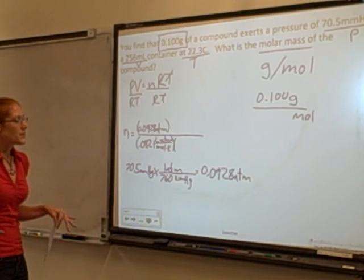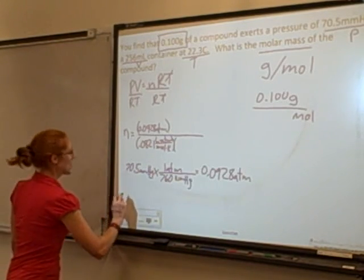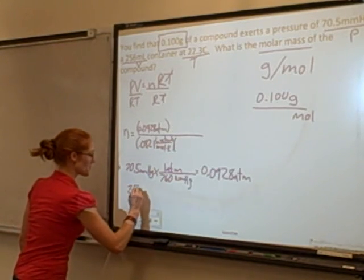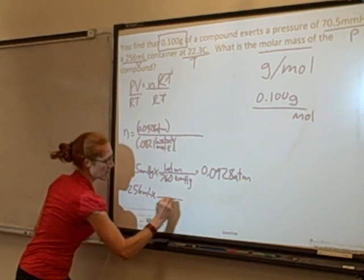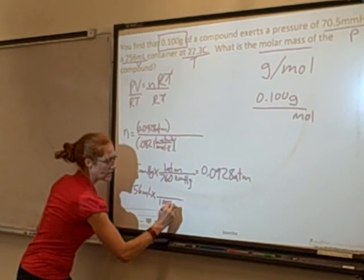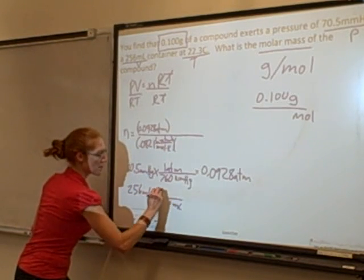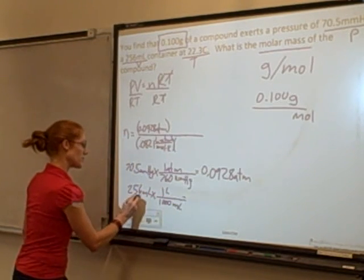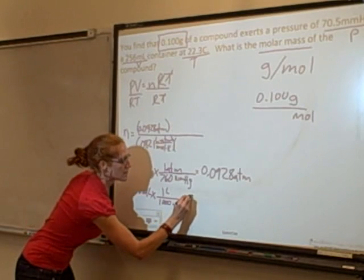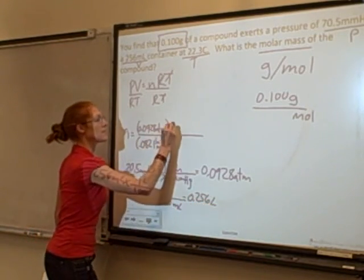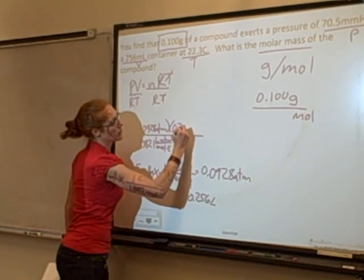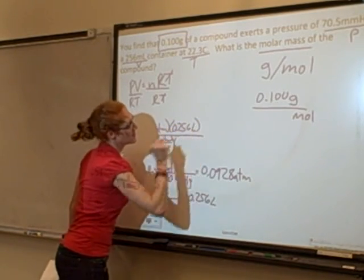My volume, I gave you milliliters and need liters. It's the beginning of the year, we'll show this conversion. 256 milliliters, and for every 1,000 milliliters, there's one liter. Okay, so I'm dividing by 1,000. That's 0.256 liters.